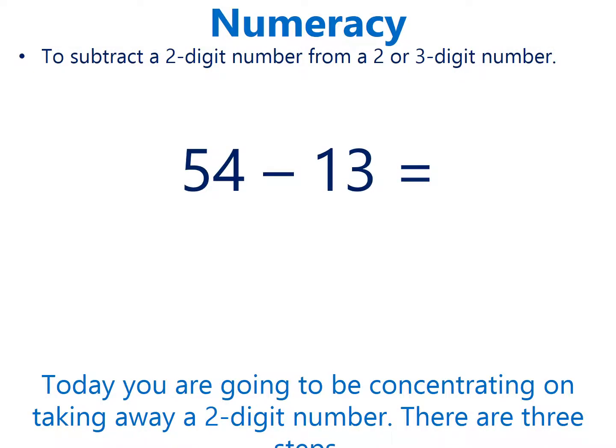To subtract a two digit number from a two or three digit number, for example, 54 minus 13. Today you're going to be concentrating on taking away a two digit number. There are three steps.